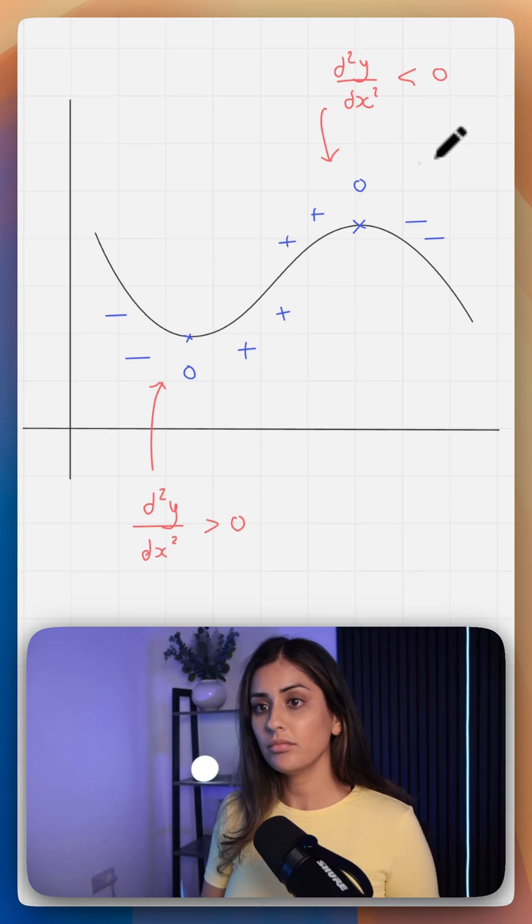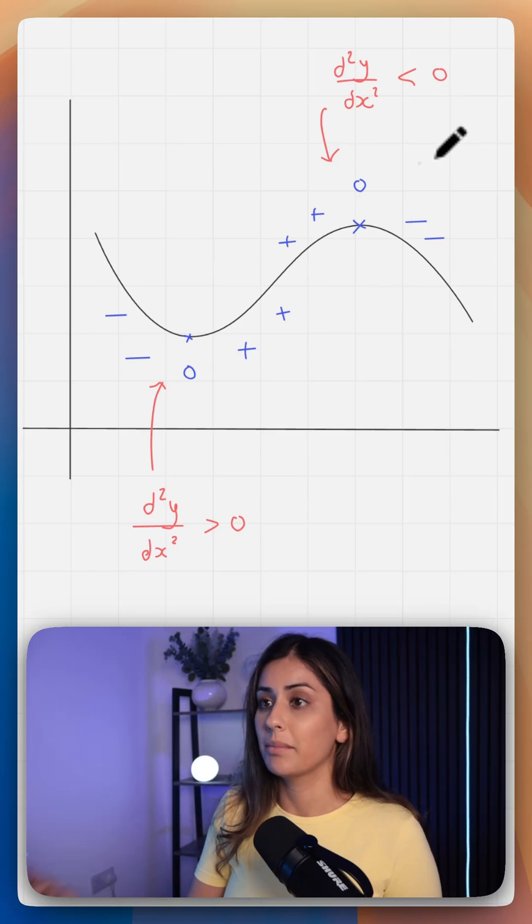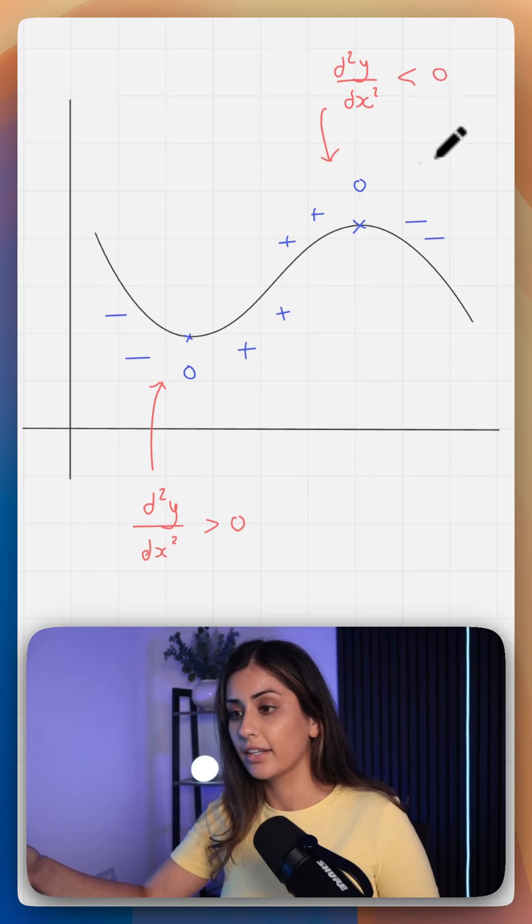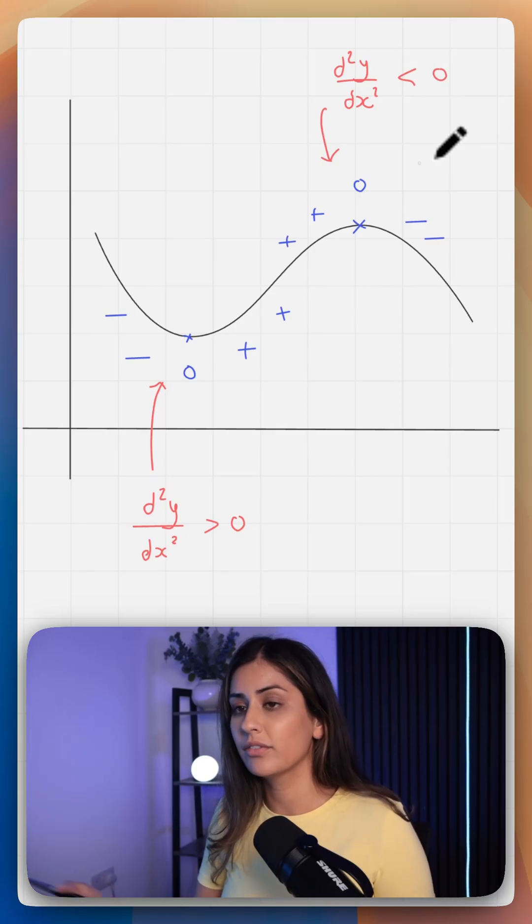So a decreasing gradient gives you a negative second derivative, which is a maximum. An increasing gradient gives you a positive second derivative, which is a minimum. I hope that makes sense.